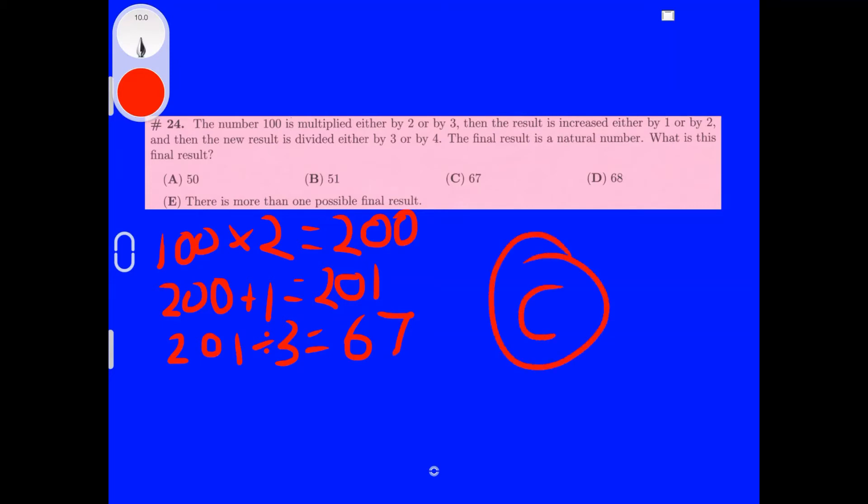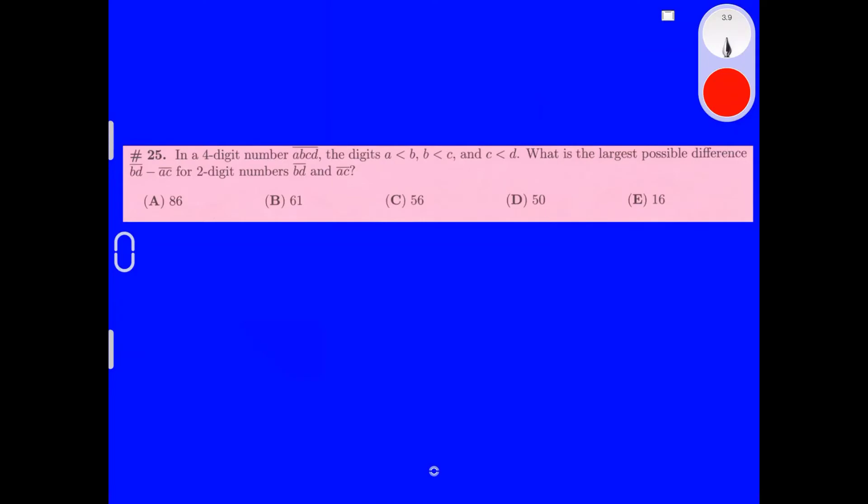In a 4-digit number ABCD, the digit A is less than B, B is less than C, and C is less than D. What is the largest possible difference BD minus AC for 2-digit numbers BD and AC? Let's try the smallest 4 numbers and the greatest 4 numbers first. Let's try 1, 2, 3, and 4. If our number was 1, 2, 3, and 4, it would be 24 minus 13, and we would get 11. Now let's try the greatest number: 6, 7, 8, 9. That would be 79 minus 68, which is 11 too. Now our question is if we can get a number greater than 11, and we have to because none of our options is 11 or less.